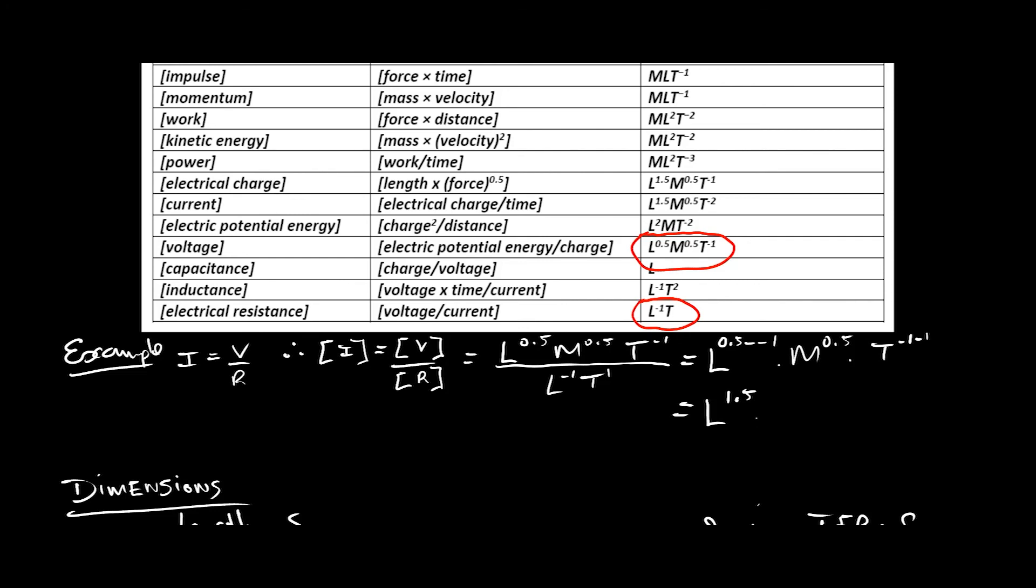M to the 0.5 is just itself. So we just write that in. We can't do anything with that. And we have T to the minus one minus one, which is minus two. So we have T to the minus two. So we're saying that is the dimensions of electrical current. And if you look at current, which is here in the table, we find out that those things are indeed those things there.